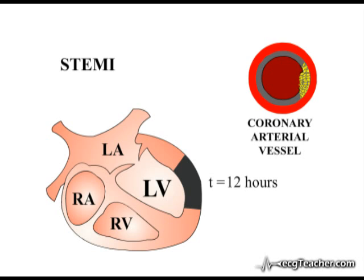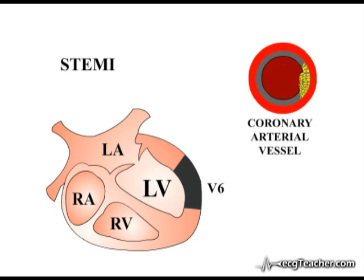At all stages of this process, characteristic changes are produced in the ECG leads directly overlying the region of myocardium that the occluded vessel supplies. As the region of myocardium affected in this example lies directly under leads V5, V6, lead I and AVL, the ECG changes we are about to discuss are observed in these leads. We will examine these changes in lead V6 as an example.